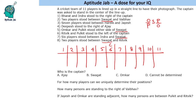With two players between Swagat and Vaibhav/Rithvik, one position could be Vaibhav and the other Rithvik. Omkar and Pulkit are confirmed on either side of Swagat.